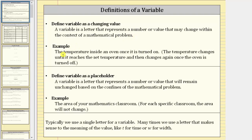As an example, consider the temperature inside an oven once it is turned on. The temperature changes until it reaches the set temperature and then changes again once the oven is turned off. So if we use a variable to represent the temperature in the oven, the variable represents a changing value because the temperature is changing.